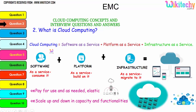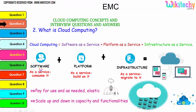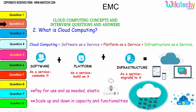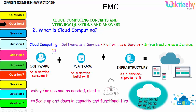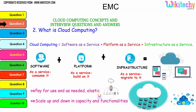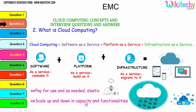Cloud computing is built on Software as a Service, Platform as a Service, and Infrastructure as a Service. The collaboration of software, platform, and infrastructure is referred to as cloud computing. The major advantage is pay-for-use - if you need minimal storage, pay for that; if you need bigger storage, pay for that. It's elastic: you can extend or reduce, scale up and down capacity and functionalities.